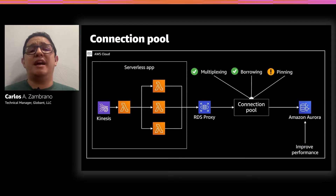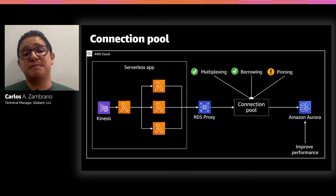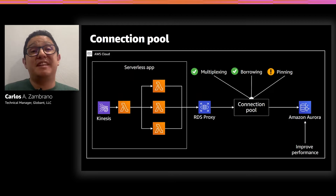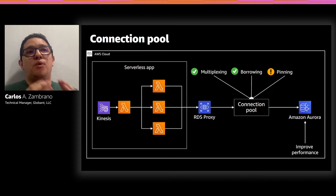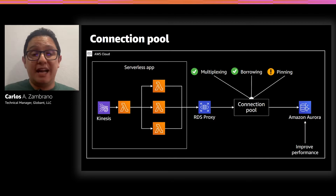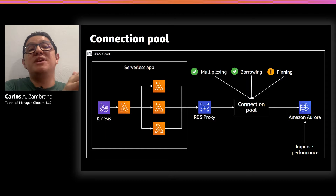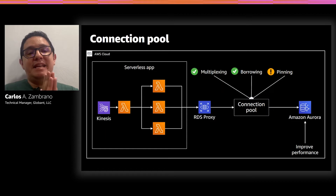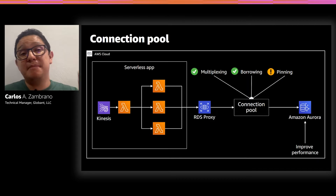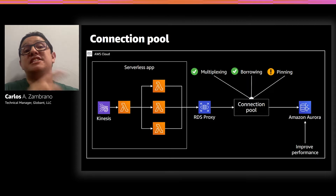About the connection pool, there are three things to consider. First, multiplexing — the reuse of a connection after each transaction in your session. Second, borrowing — when the proxy temporarily removes a connection from the pool, reuses it, and then returns it to the original pool. Third, pinning — when the RDS proxy is not sure it can reuse a connection, it maintains that connection in the session until the session ends.